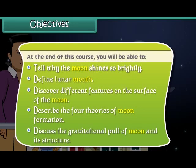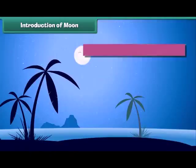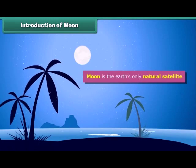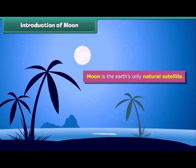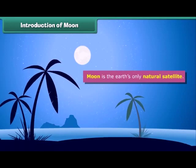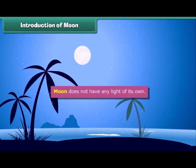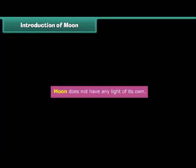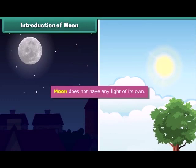Moon is the Earth's only natural satellite. It is the second brightest object in the sky after the Sun. But moon does not have any light of its own. The light you see is actually from the Sun reflecting off the surface of the moon. So if the Sun wasn't there we would not be able to see the moon.